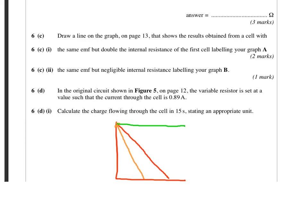We'll have a quick look at part D here, first of all. Calculate the charge flowing through the cell in 15 seconds if the variable resistor is set so that the current is 0.89 amps. So we've got current of 0.89 amps, 15 seconds. We're after the charge. So we're going to use Q equals IT, 0.89 times 15, which gives us an answer of 12 coulombs.